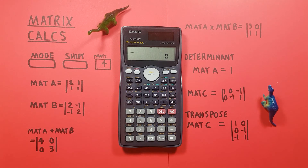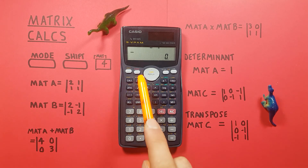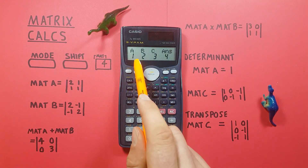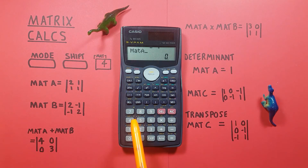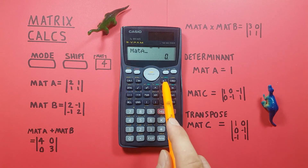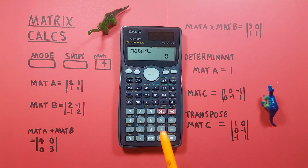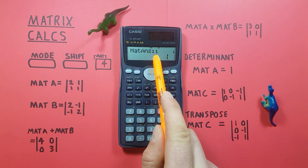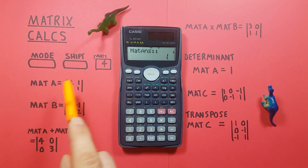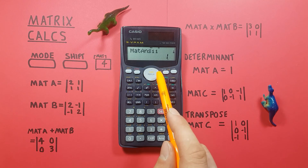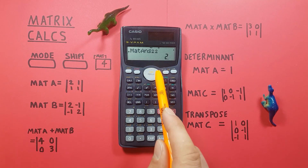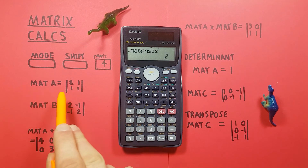Finally, we can also invert matrices. To find the inverse of matrix A: go to the matrix menu and select matrix A. Then press the inverse key — that's the X to the power of minus one key — and press equals. The result is the inverse of matrix A: row 1 column 1 = 1, row 1 column 2 = negative 1, row 2 column 1 = negative 1, and row 2 column 2 = 2.